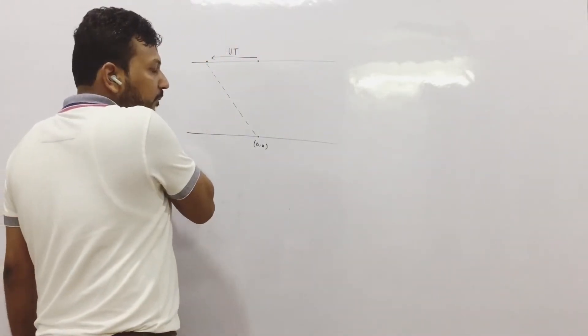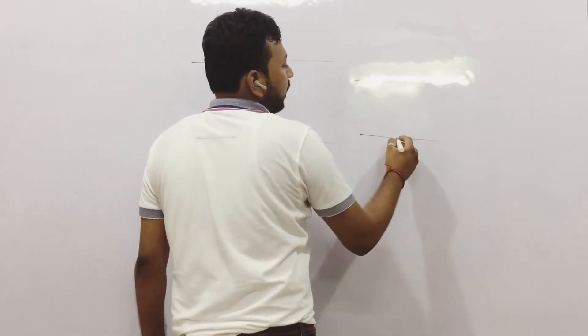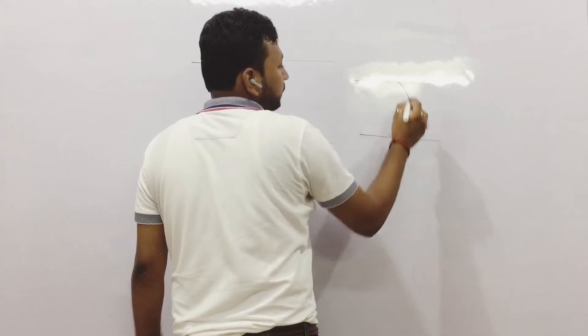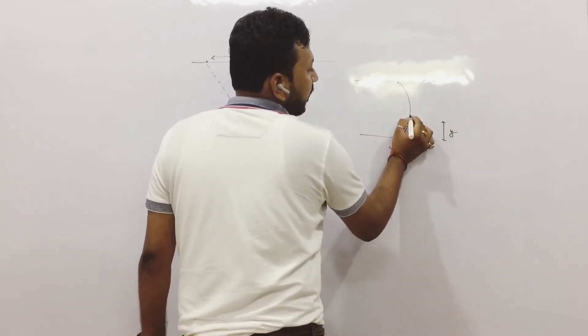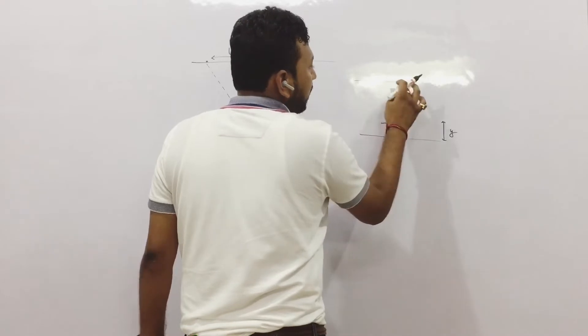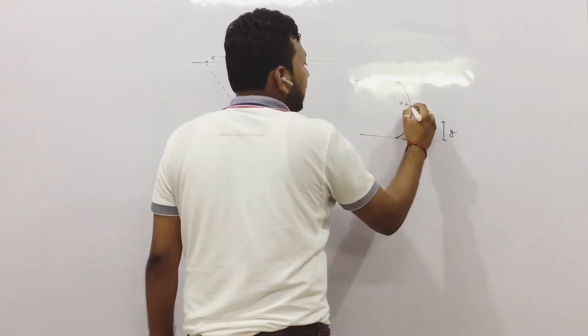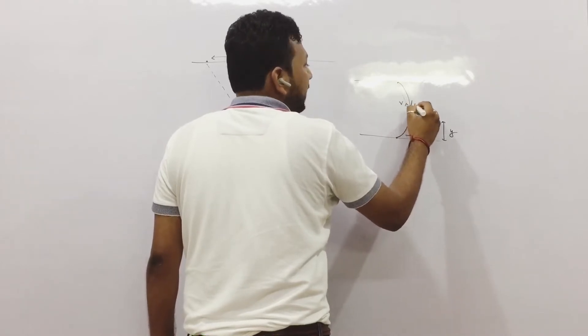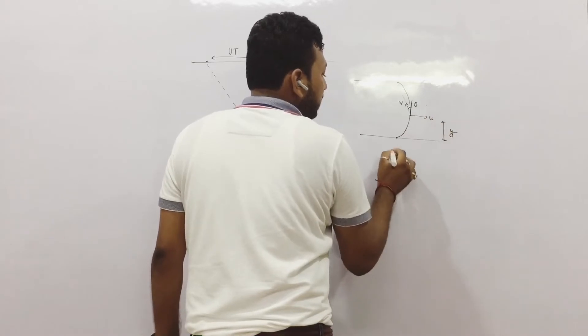Now suppose, actually what is happening, actually this is happening. At any instant if it reaches some height y, it is pointing to this point with some speed v. Let us consider this angle as theta and this is the velocity of current.